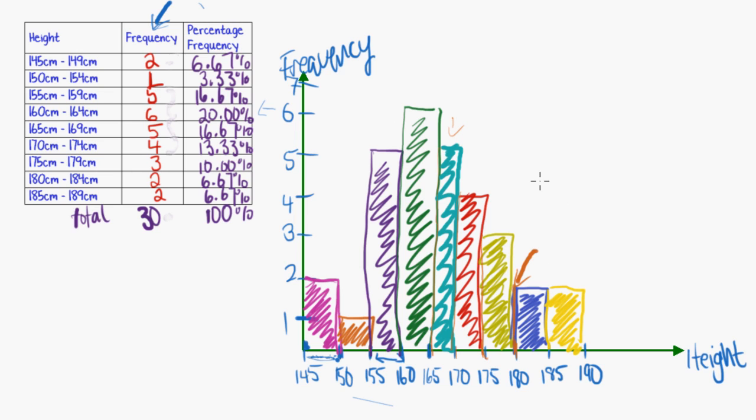So for a frequency histogram like this, where the data is continuous and they're bumping into each other, i.e. 145 up to 150, like 149 is right next door, then that's where they would be touching each other.